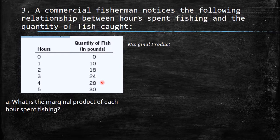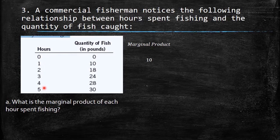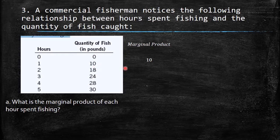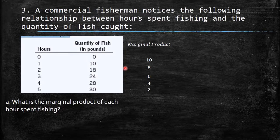What is the marginal product of each hour spent fishing? Marginal product is the change in output over the change in hours worked. The denominator is always one, so we just look at the change in output: the first hour gives 10, the second gives 8, then 6, 4, 2. As you can see, marginal product is decreasing.